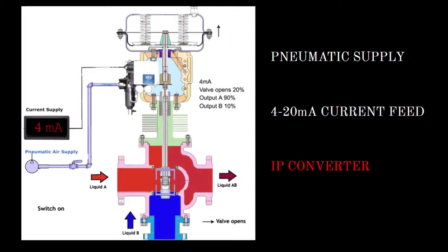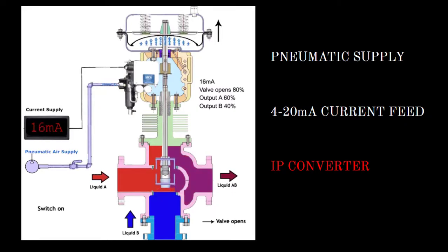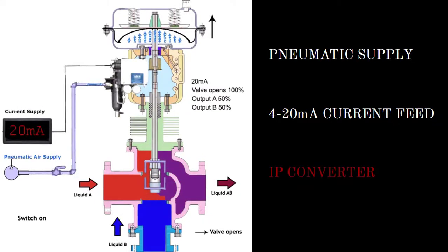When the current feed gets increased, the valve gets actuated more. The valve will open as a percentage with respect to the increasing power feed. When the current is fed to the IP converter, it will control the flow of air to the valve.